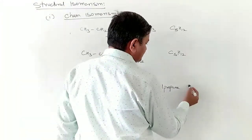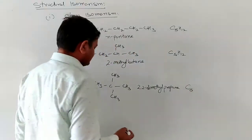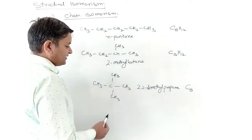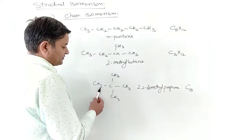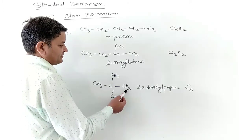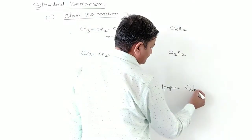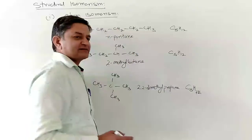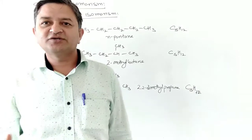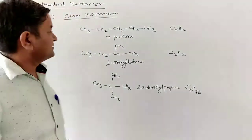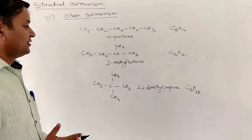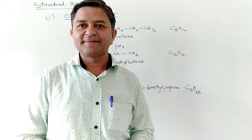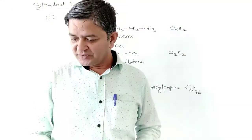This can be counted as C5: 1, 2, 3, 4, 5. Hydrogens: 3, 6, 9, and 12, giving C5H12. So these are examples of chain isomerism — compounds which have the same molecular formula but different structures, and that is called chain isomerism.